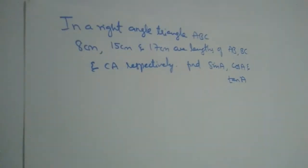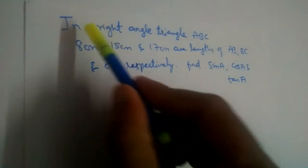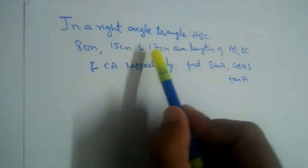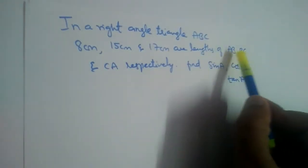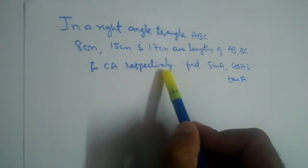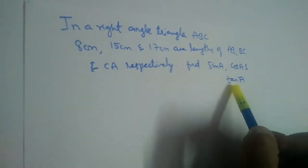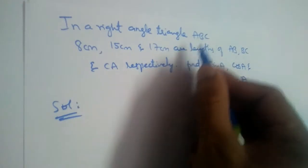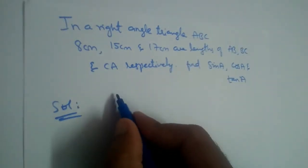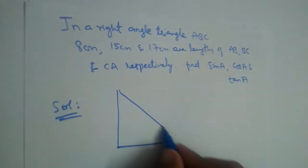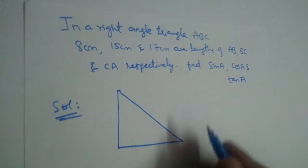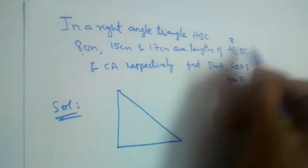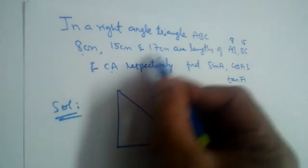In this video we will solve a few problems in a right angle triangle ABC. 8 centimeter, 15 centimeter, and 17 centimeter are the lengths of AB, BC, and CA respectively. We need to find sin A, cos A, and tan A. Let us draw a right angle triangle. Here AB is 8, BC is 15, and AC or CA is 17.